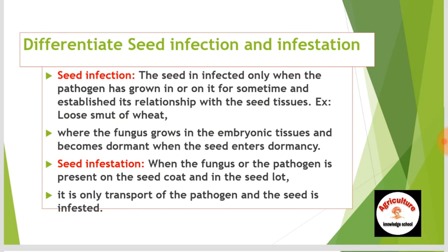What is the difference between seed infection and seed infestation? Seed infection occurs when the pathogen has grown in or on the seed for some time and established its relationship with the seed tissues — for example, loose smut of wheat, where the fungus grows in the embryonic tissues and becomes dormant when the seed enters dormancy. Seed infection equals internally seed-borne pathogen. Seed infestation is when the fungus or pathogen is present on the seed coat and in the seed lot — it is only transport of the pathogen. Seed infestation is caused by externally seed-borne pathogens.